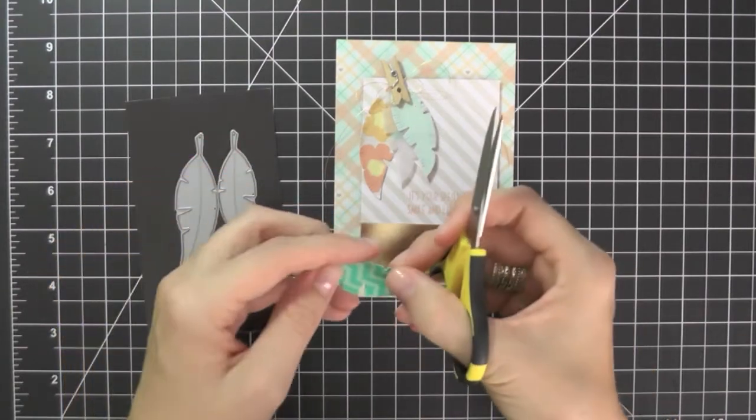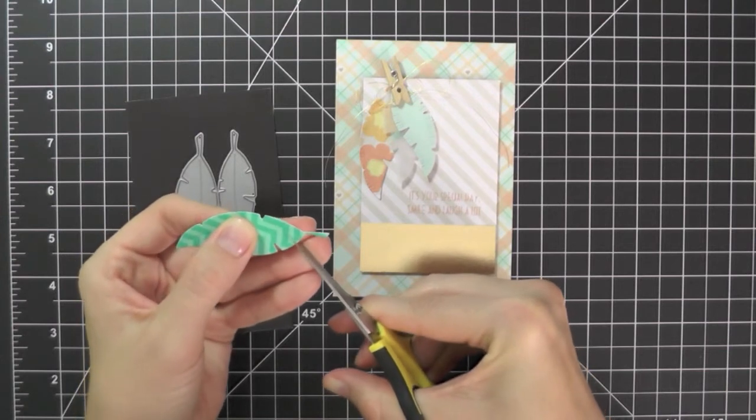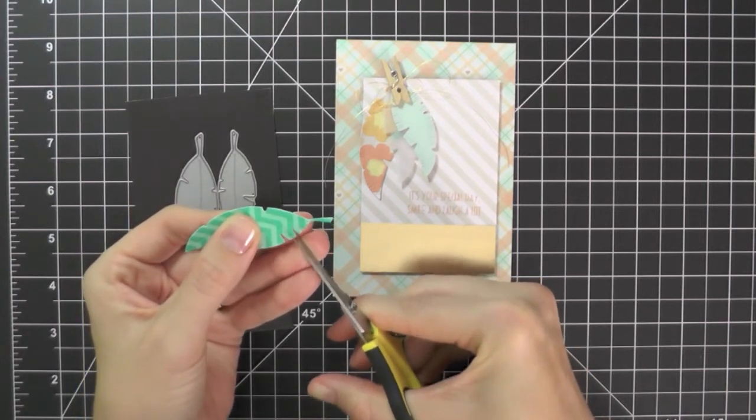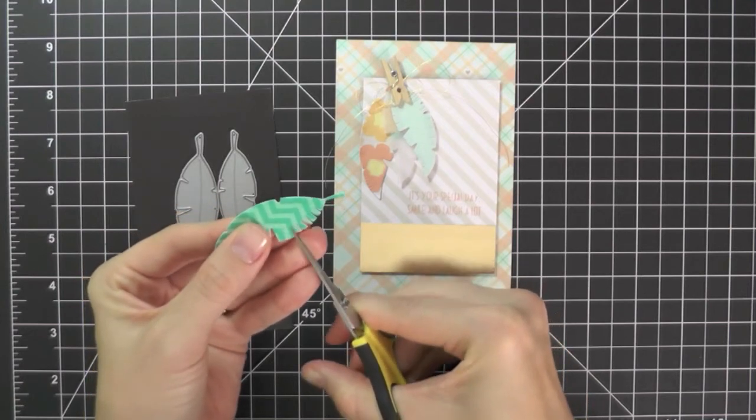Now this would actually be a great time to use fringe scissors, but because I still don't own them, I'm just going to be cutting little slits using my cutter bee scissors.